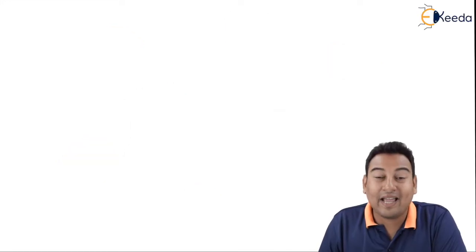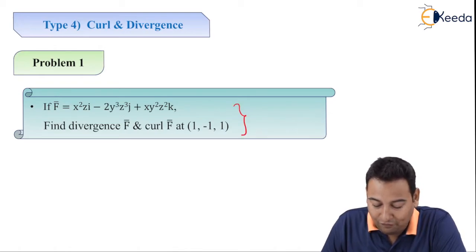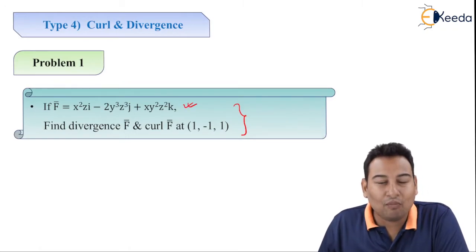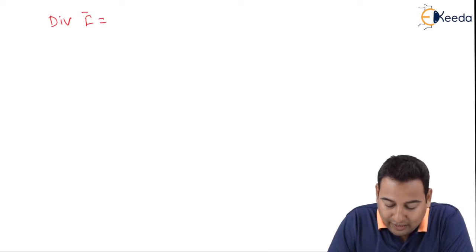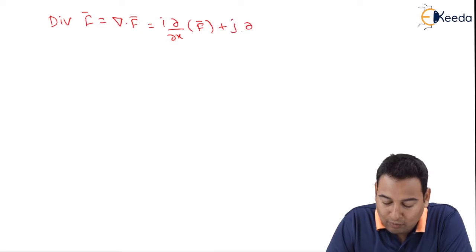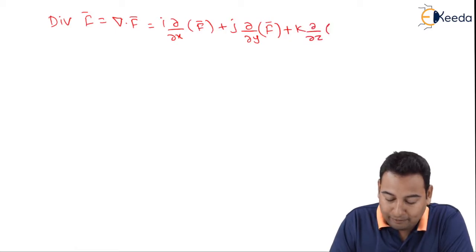Welcome back friends. Let's see type 4, that is curl and divergence. Let's have a look at the given problem. Here divergence and curl of f̄ is asked. Let me write down the formula for divergence and curl — we have already discussed this in video number one, but for those who haven't seen that video, let me revise quickly. Divergence of f̄ is actually del dot f̄, that is i ∂/∂x of f̄ plus j ∂/∂y of f̄ plus k ∂/∂z of f̄.